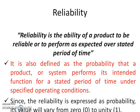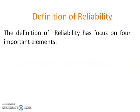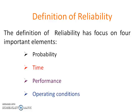Since reliability is expressed as probability, its value lies between 0 to 1. The definition of reliability has focus on four important elements: Probability, Time, Performance, and Operating Conditions.